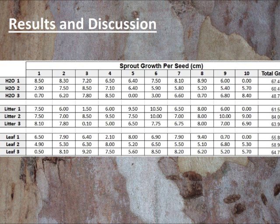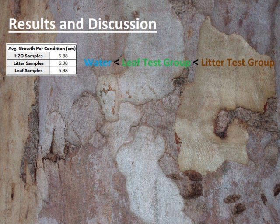Here's what we found. The average growth for our control group was 5.88 centimeters. The average growth for our litter test group was 6.98 centimeters. And the average growth for our leaf test group was 5.98 centimeters. According to these results, our control group had the least amount of growth, and the litter group had the most. One would think, based on these results, that this would prove that eucalyptus leaves were not negatively allelopathic at all — but maybe even positive.